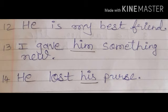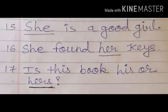Number fourteen: he lost his purse. In this sentence, 'his' is a pronoun. Number fifteen: she is a good girl. In this sentence, 'she' is a personal pronoun. Number sixteen: she found her keys. In this sentence, she and her both are pronouns. But we see all other pronouns before this, so after 'she', we have the personal pronoun 'her'. So in this sentence, I underline only 'her'.